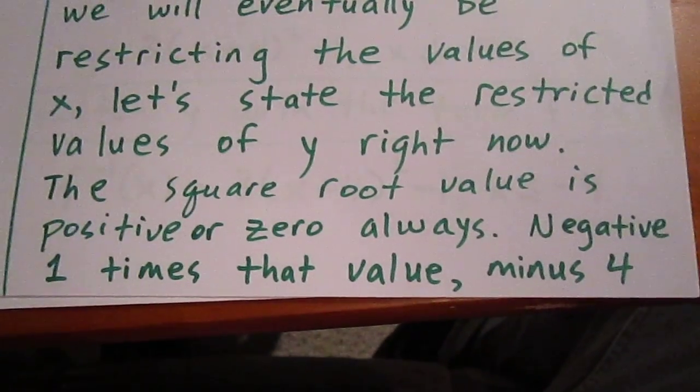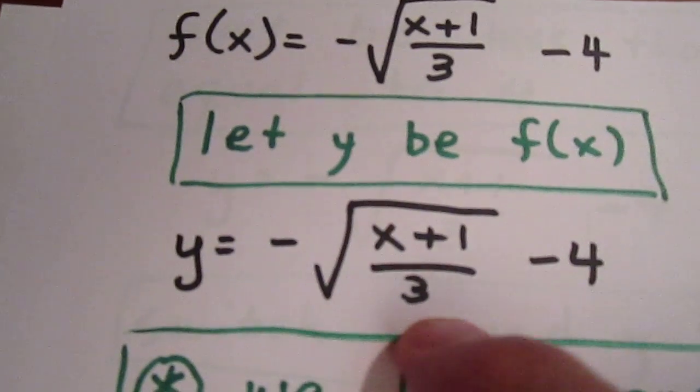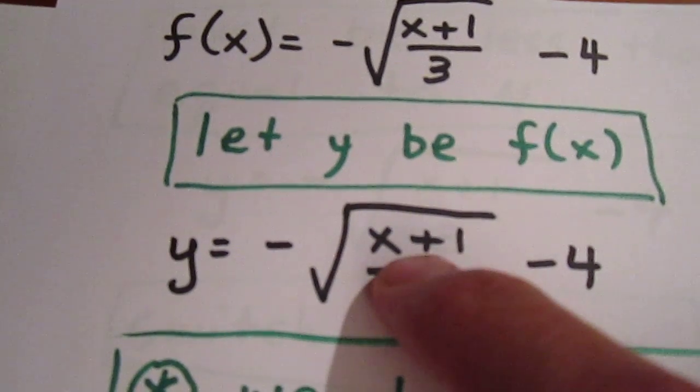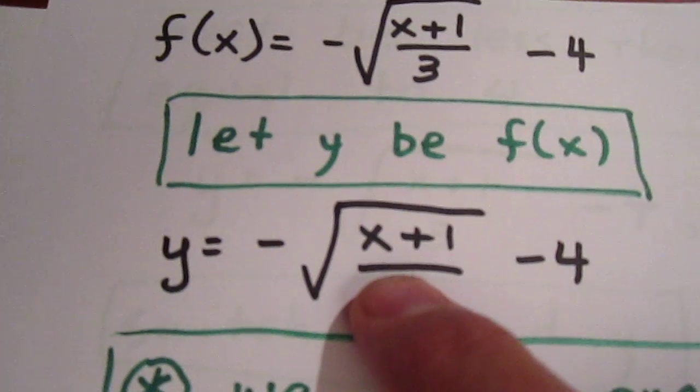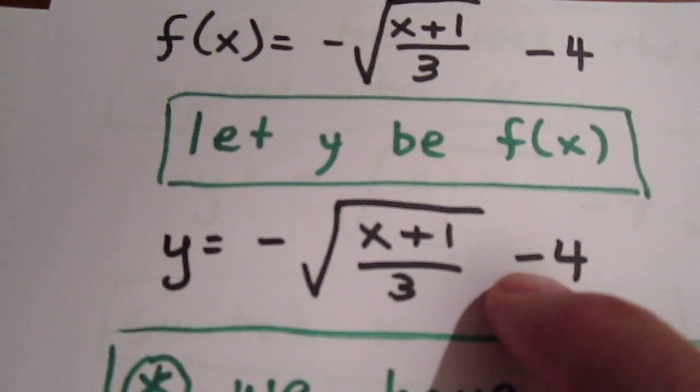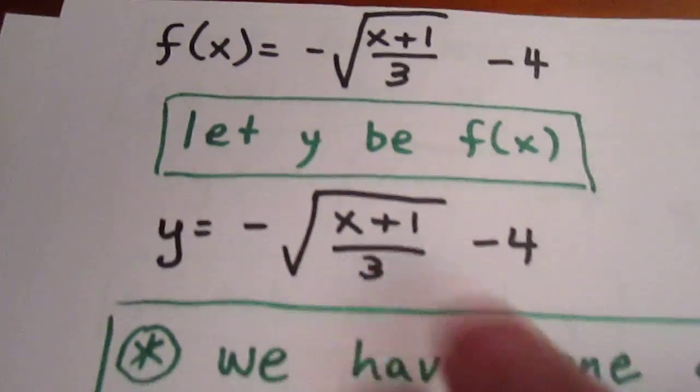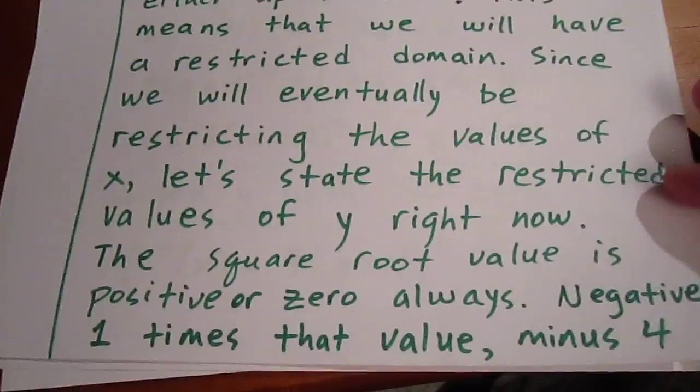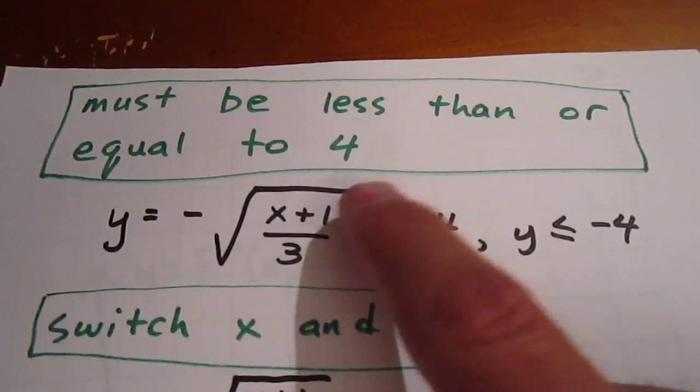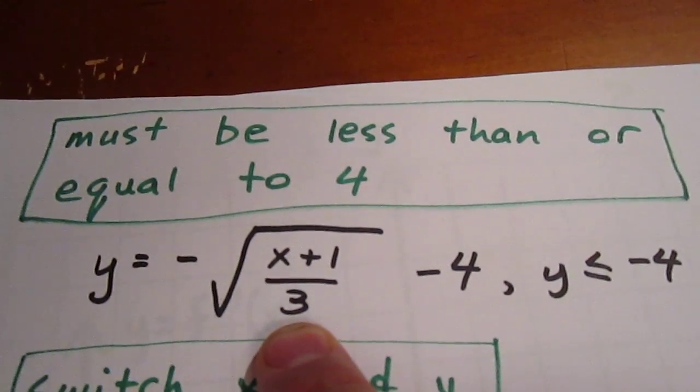The square root value is always positive or zero. Since we're multiplying it by a negative number, what we're going to have here is either negative 4 plus zero or negative 4 minus some quantity. So we can say that our y value is always going to be less than or equal to negative 4.